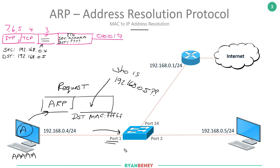The switch then looks at the destination and says: your destination is all F's, and I know that all F's means broadcast, so my action is to flood the traffic. A copy of the request goes out port 24 towards the router and out port 2 towards PCB. When the router receives that ARP request, it decapsulates the layer 2 frame, looks at the layer 3 IP header, and sees it is 192.168.0.1 and not 192.168.0.5 — therefore this is not for me — and the frame is dropped by the router.